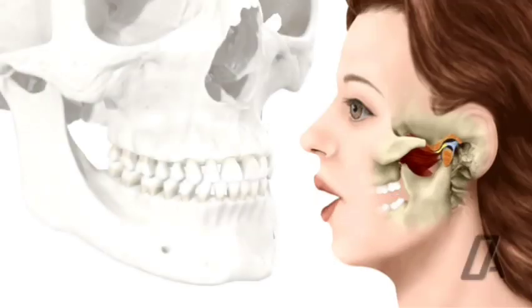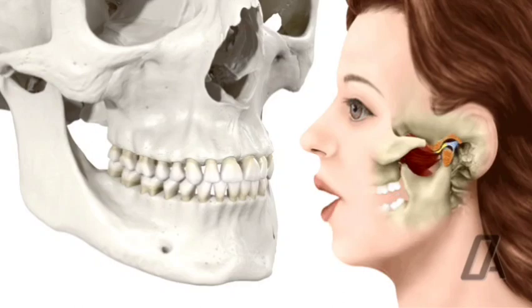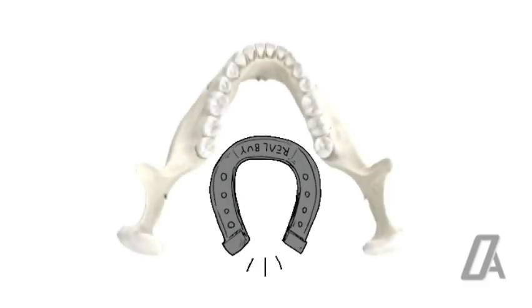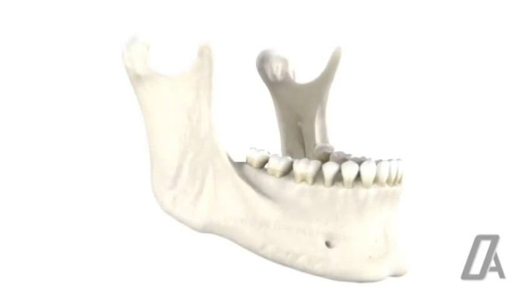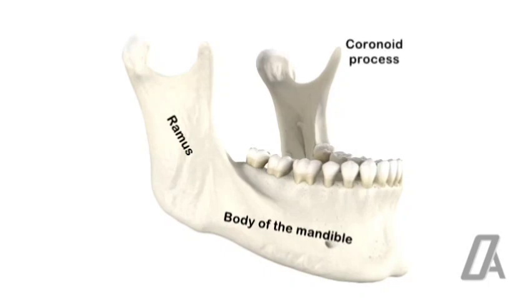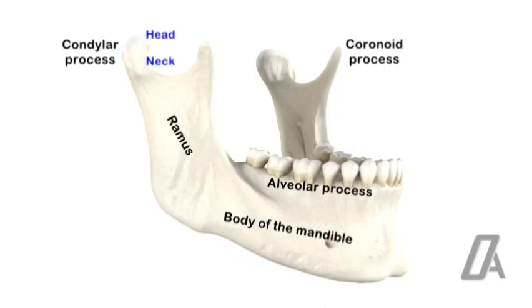The mandible is the only movable bone of all the bones of the face. It is a horseshoe-shaped bone with a body, ramus, coronoid process, alveolar process, and condylar process consisting of the head and neck. The head articulates with the glenoid fossa for the formation of the temporomandibular joint.